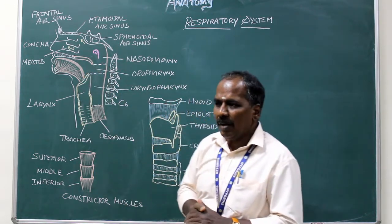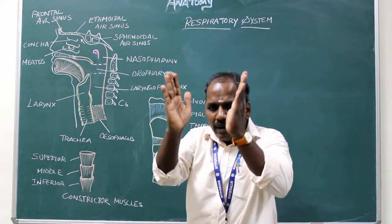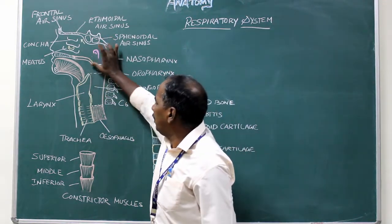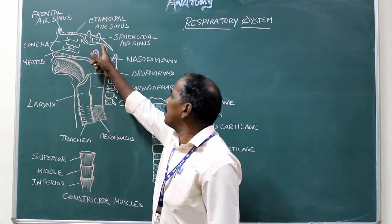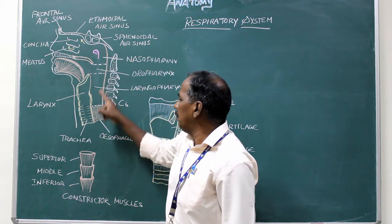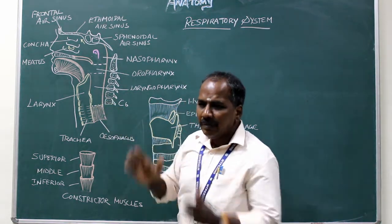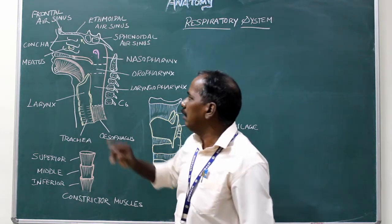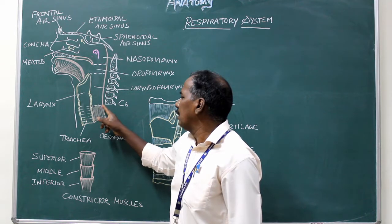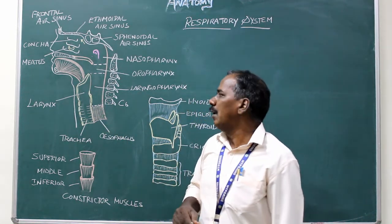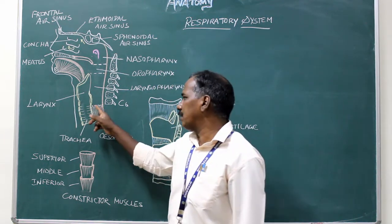Pharynx: It is a funnel-shaped muscular organ. Above it is wider, below it is narrow. It extends from the base of the skull to the lower border of C6 vertebra, or equivalently the lower border of the cricoid cartilage. Both are at the same level.